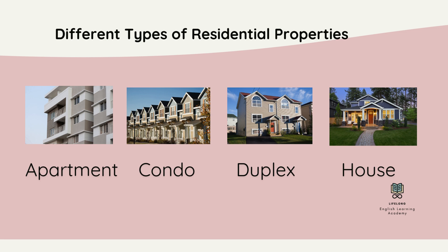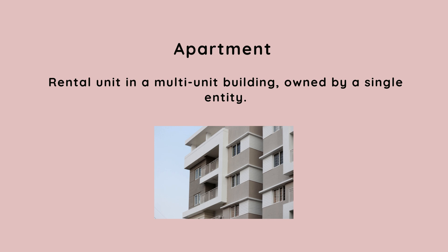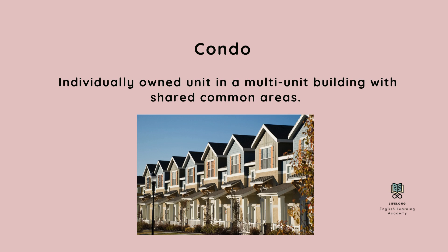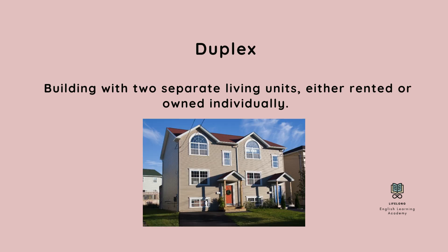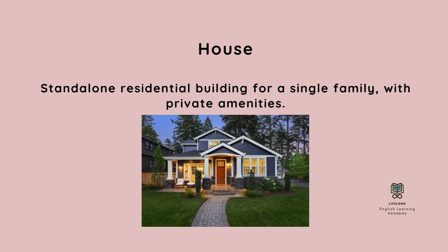Apartment: a rental unit in a multi-unit building, owned by a single entity. Condo: an individually owned unit in a multi-unit building with shared common areas. Duplex: a building with two separate living units, either rented or owned individually. House: a standalone residential building for a single family, with private amenities.